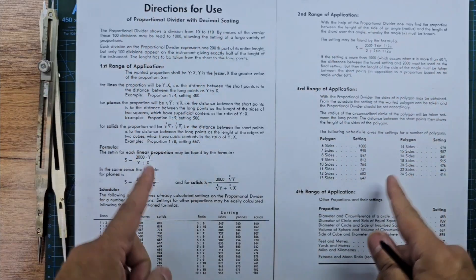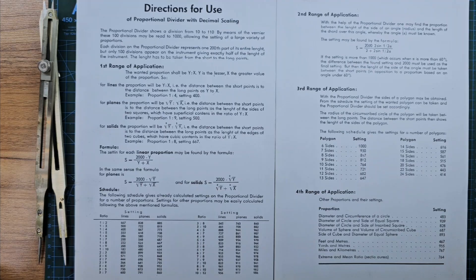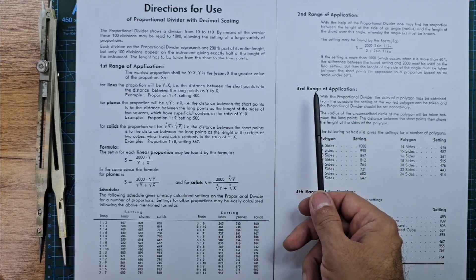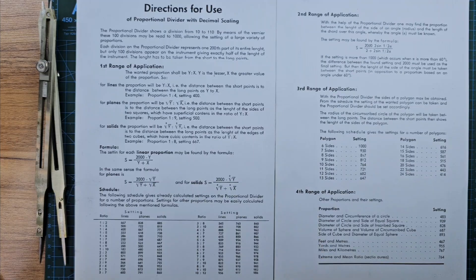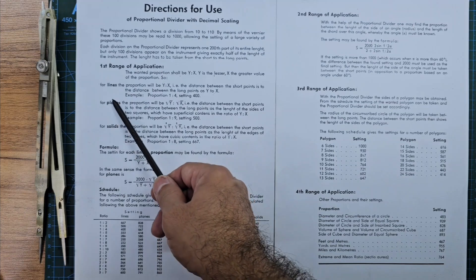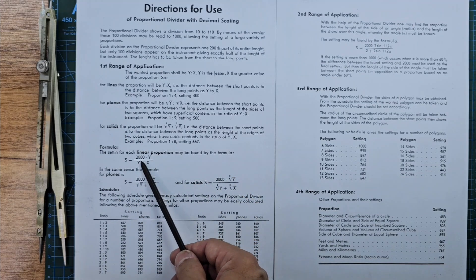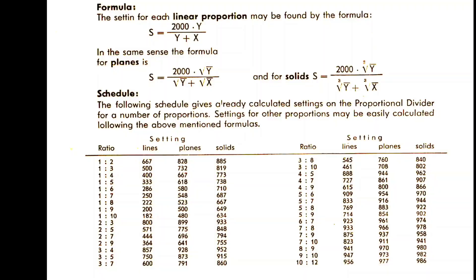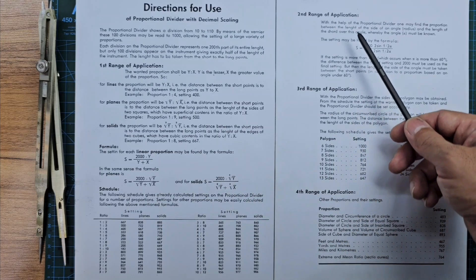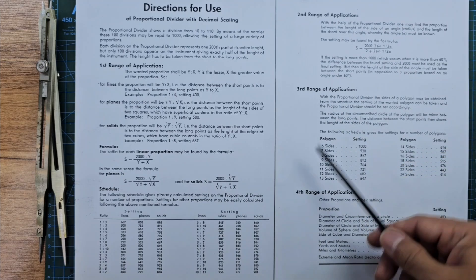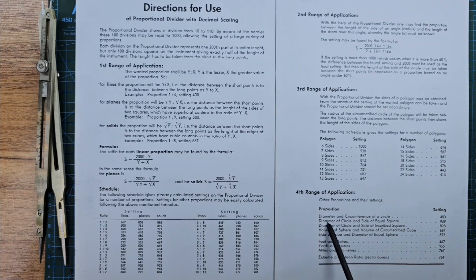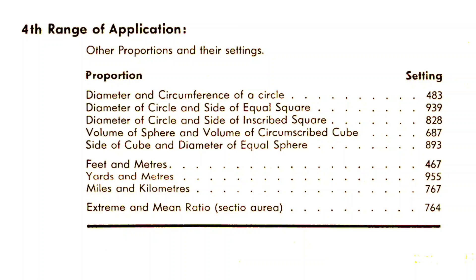The leaflet companion divides the range of application into 4 sections. First: ratio of lines, planes, and solids. Second: ratio of side of an angle and its chord. Third: dividing a circle. Fourth: some special uses. In the first range, y to x is the ratio between lines, planes, and solids, where y is the lesser and x is the greater value. You can use the provided formulas to calculate the setting, and there are pre-calculated charts too. The second and third ranges are connected — you can use the formula in the second range or the chart in the third range to divide a circle or scribe a regular polygon. The fourth range covers special uses like pi, phi, or the ratio of feet and meters.